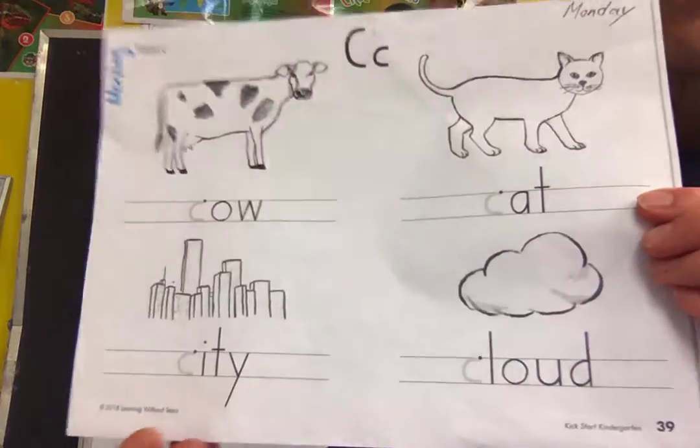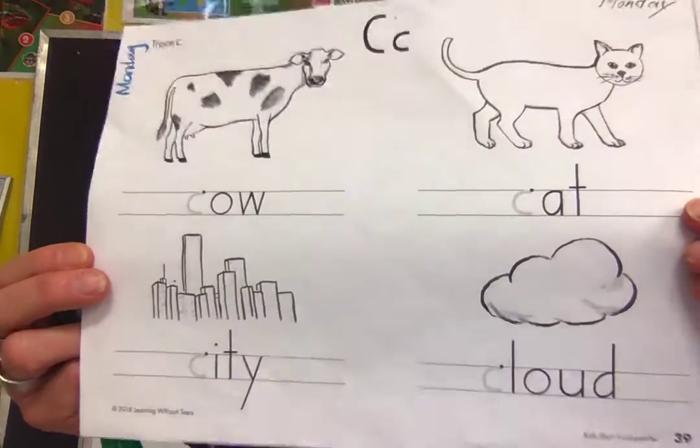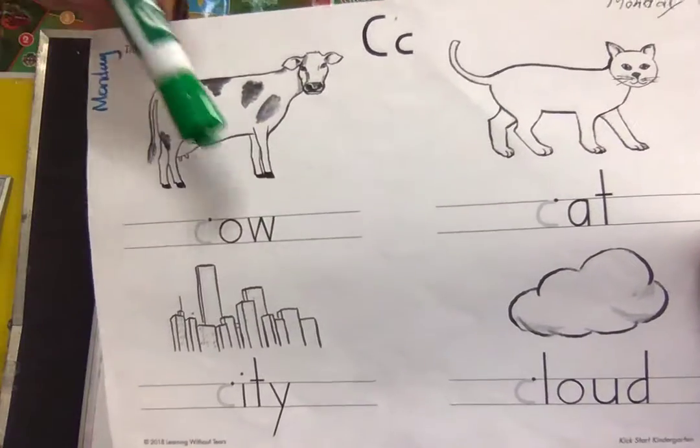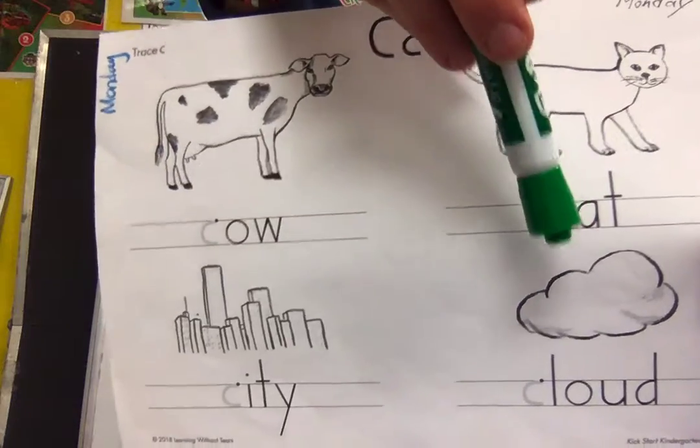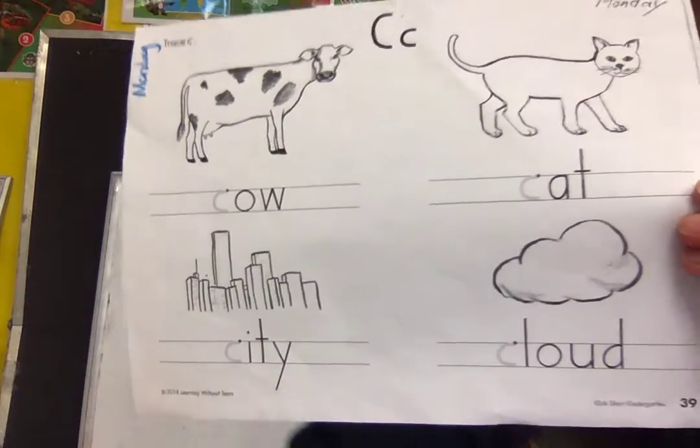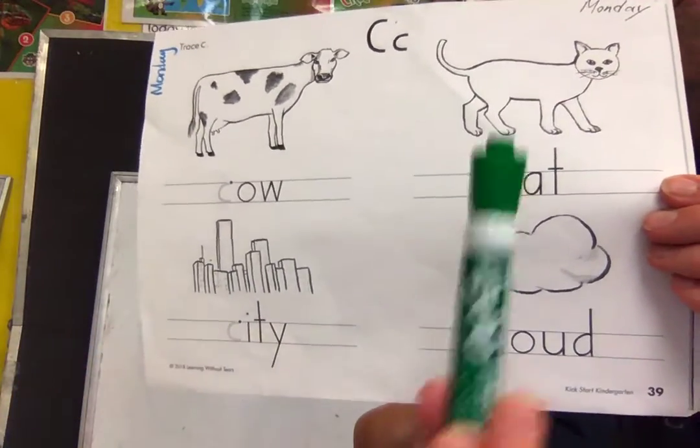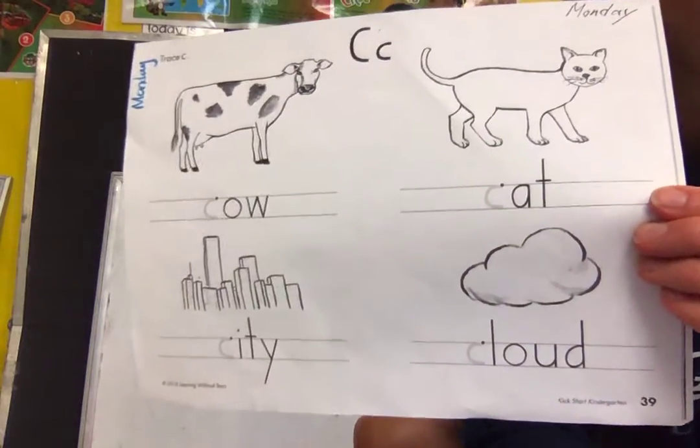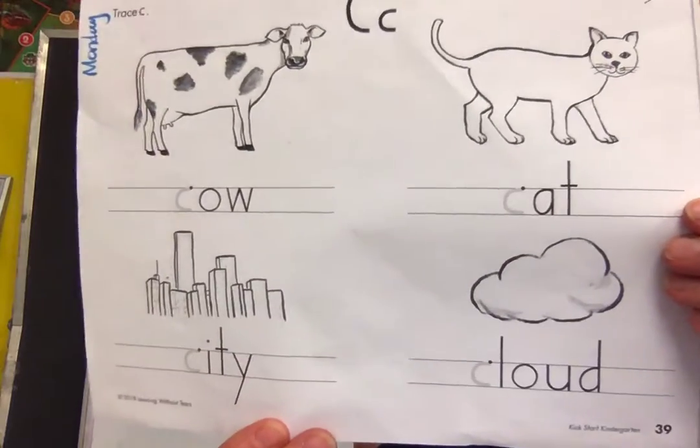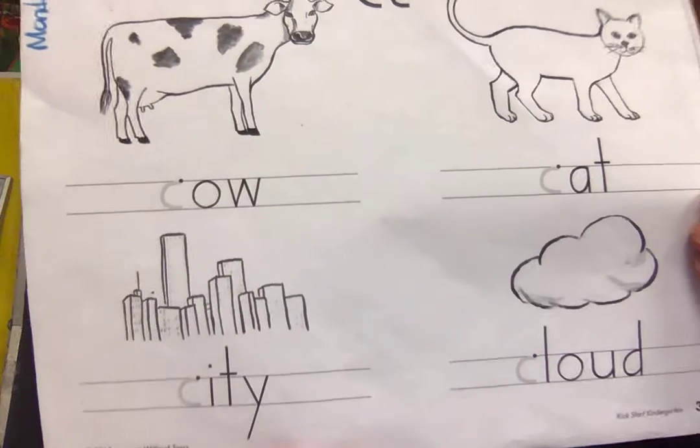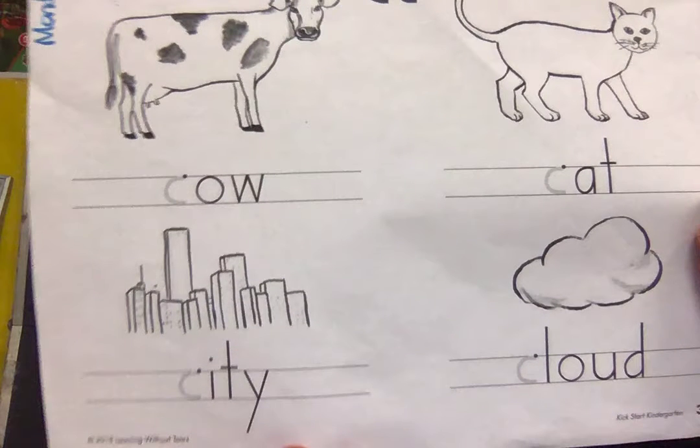Boys and girls, if you could trace magic C four times, one, two, three, four. Don't use a marker like teacher Shelly. Please use a crayon or pencil. That's all you have to do on this page. Okay. Sorry about that guys.